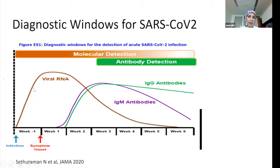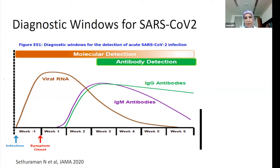Viral RNA can be detected starting around day three, and week one yields detection in almost all cases. Viral titers then decrease, and by week three most people will clear the virus. This coincides with the development of antibodies. With SARS-CoV-2, IgM and IgG appear at about the same time; sometimes IgM may lag slightly behind IgG. In some studies there is not a huge difference between IgG and IgM seroconversion.